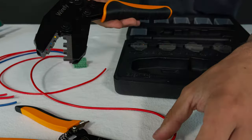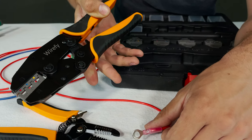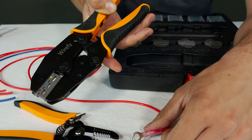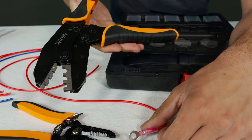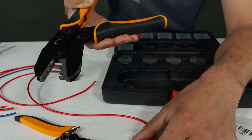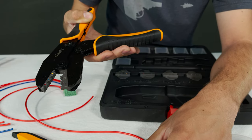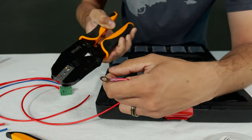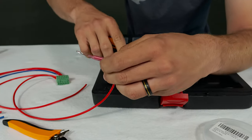Now this is a ratcheting type so if I stopped halfway it'd be stuck. You'd have to continue squeezing in order for it to release. So this tool is nice because it makes sure that you don't under crimp your connectors as long as you use the correct setting based on the color of your terminal.